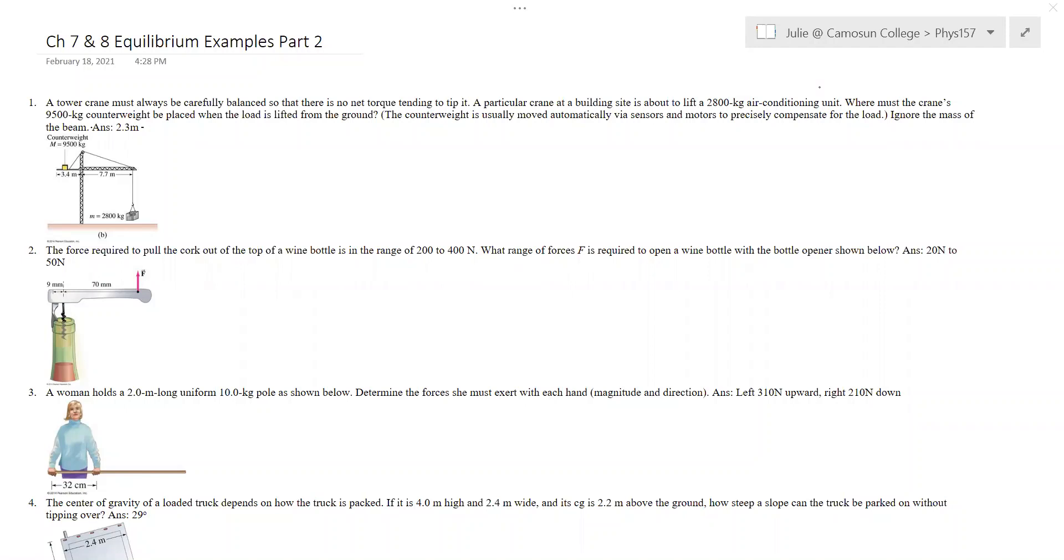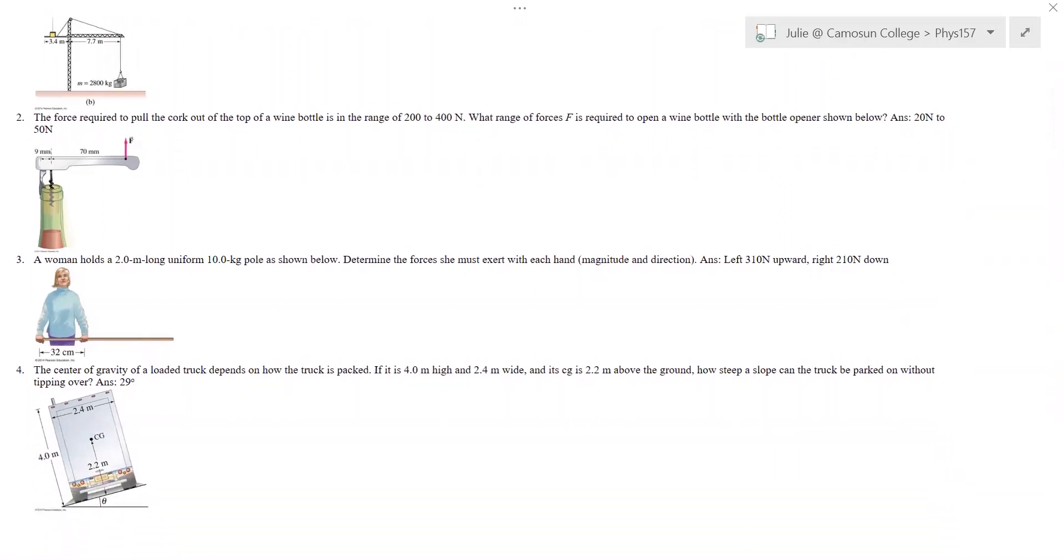The second is a corkscrew. We need to know just how hard you have to pull up on that corkscrew to get the cork out. The third is a woman holding the pole and the fourth is conditions for tipping which is an interesting problem in itself. You can go back and look at the questions and try to do them yourselves but I'll go through and do them one by one here.